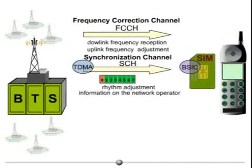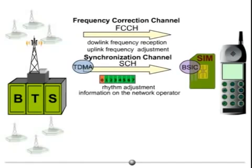After this step, the mobile is able to decide whether it has chosen the proper network. If not, it starts the same procedure again, trying with the second strongest FCCH received.